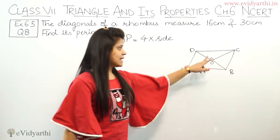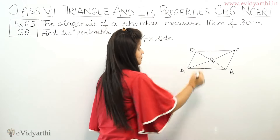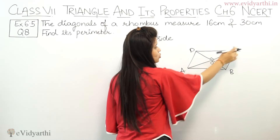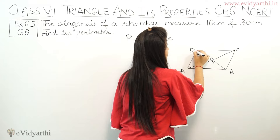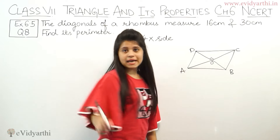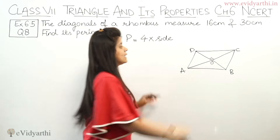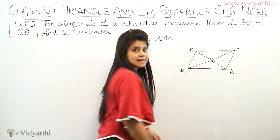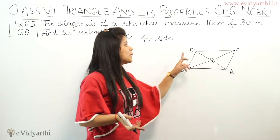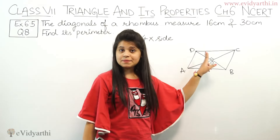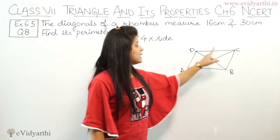The diagonals bisect at a 90-degree angle, so I can take triangle DOC. With that, I will get a side, because I need to find a side. DC is a side — if you find one side, all sides are the same.